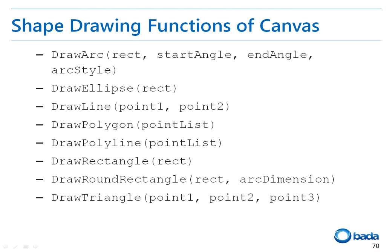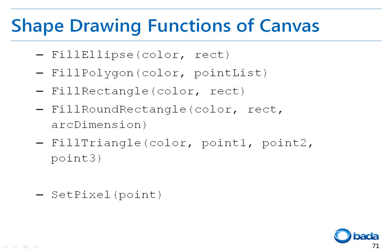Bada provides various shape drawing functions. Bada supports the arc, ellipse, line, polygon, polyline, rectangle, round rectangle, and triangle drawing functions. A filling function is supported for the ellipse, polygon, rectangle, round rectangle, and triangle shapes. In addition, you can draw a point at a specific coordinate on the screen by calling the setPixel function.